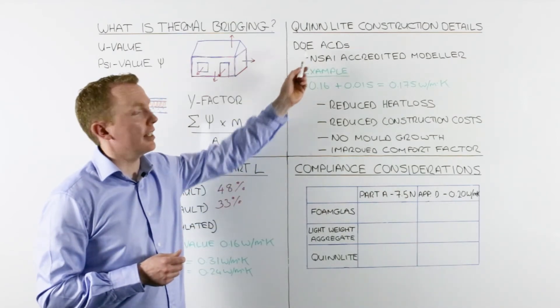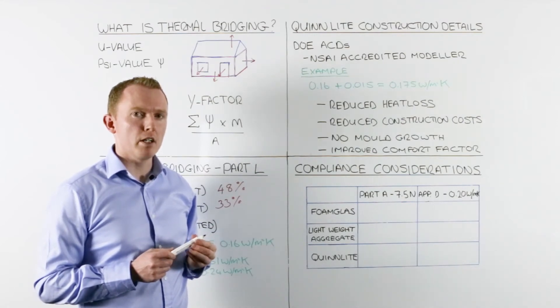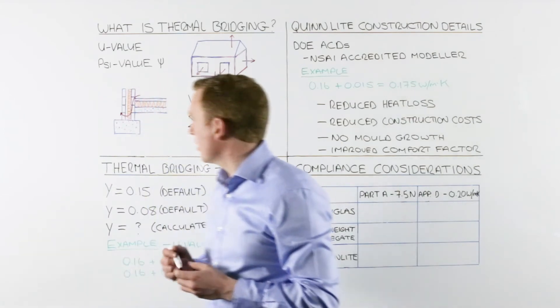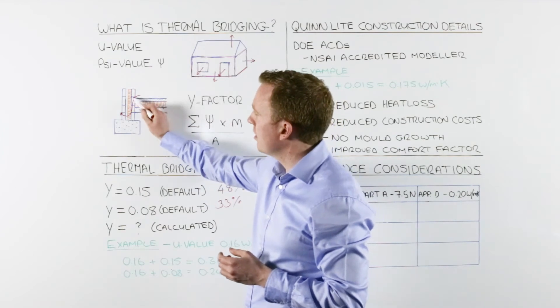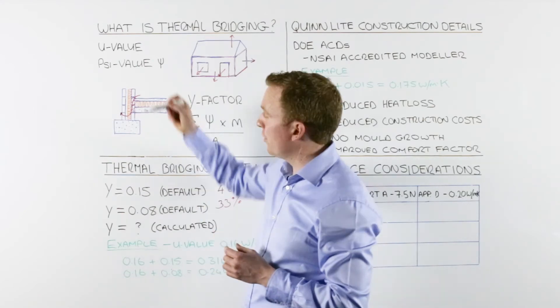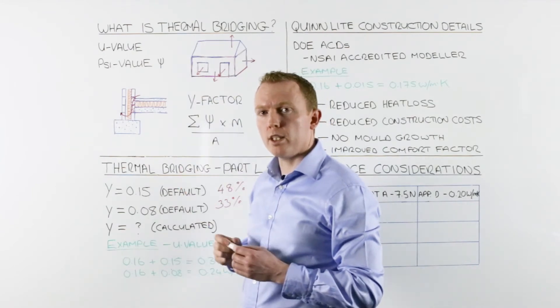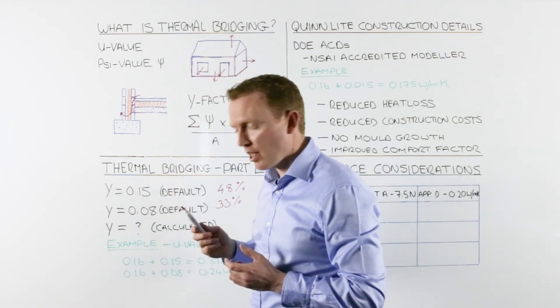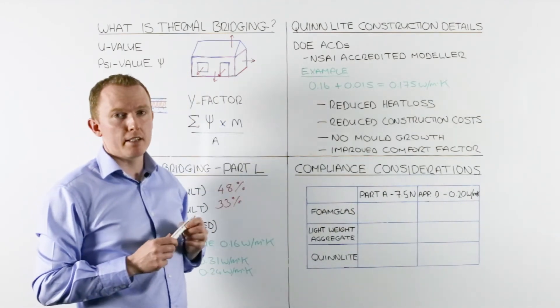What we've done is taken the DOE acceptable construction details and where possible introduced Quinlite blocks into those details to improve the performance of the junction. So if we look here—this junction we looked at earlier—what we've done is introduced two Quinlite blocks at the key location to provide continuity of insulation across the junction. By introducing those two Quinlite blocks, we've improved the thermal performance of that junction by 10 times. All our junctions have been developed and approved by an NSAI accredited thermal modeler.